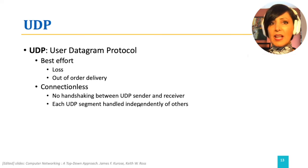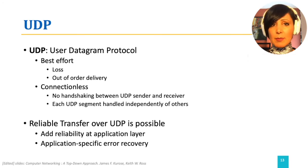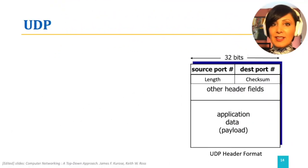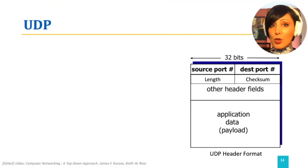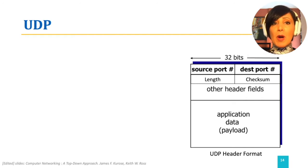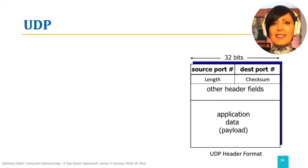Reliable transfer over UDP is still possible, if implemented at the application layer. The UDP header contains source and destination port numbers, length of the segment, and a checksum field for minor error detection.